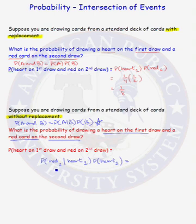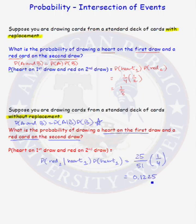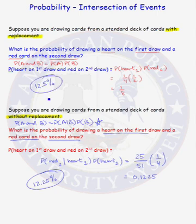What is the probability of a red card on the second draw given a heart on the first draw? On your second draw there are 51 cards remaining. Since a heart is a red card, only 25 of the remaining 51 cards are red. So P(red on 2nd | heart on 1st) = 25/51. The probability of drawing a heart on the first draw is 1/4, as before. The resulting probability is approximately 12.25% — slightly less than the 12.5% (1/8) we got when drawing with replacement.